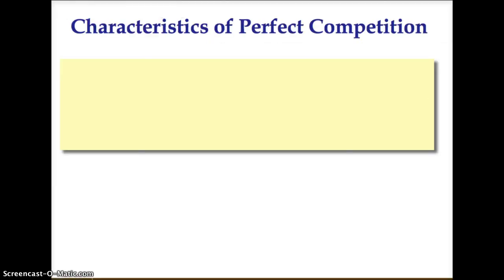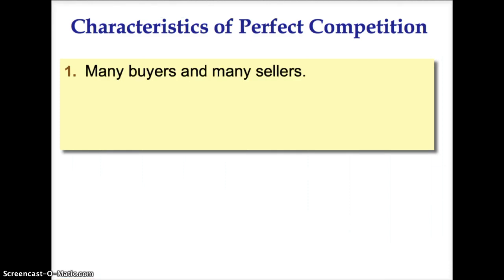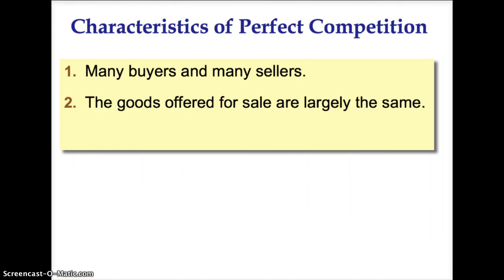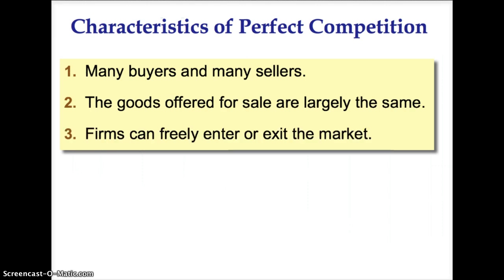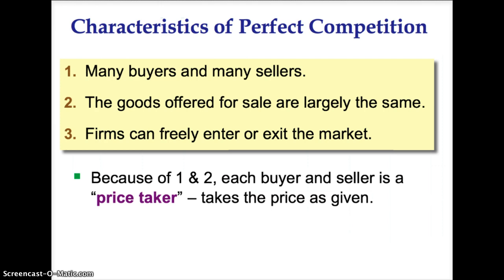There are three main characteristics of perfect competition: many buyers and many sellers, the goods offered for sale are largely the same, and firms can freely enter or exit the market. Because of the first two characteristics, each buyer and seller is considered to be a price taker, meaning they take the market price as given and cannot influence the price.